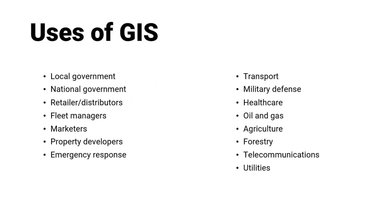Who uses GIS? Uses of GIS range from indigenous people, communities, research institutions, environmental scientists, health organizations, land use planners, businesses, and government agencies at all levels. Some examples are given below.